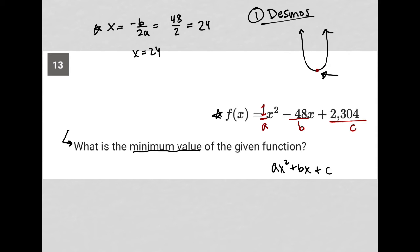That means that, here, let's make this our x-axis, that this is 24 on the x-axis. What I need to figure out is what it is on the y-axis to find my actual minimum value.